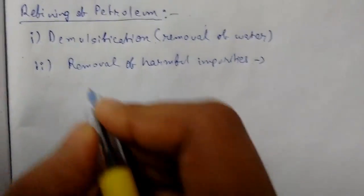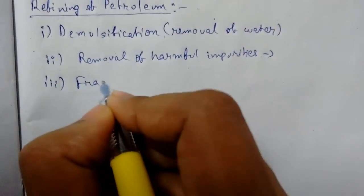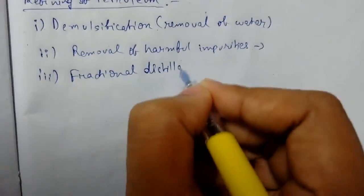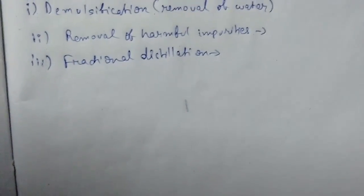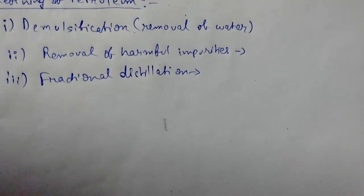The next process is fractional distillation. Fractional distillation is a very important process. The crude oil is heated in an iron retort at about 400 degrees Celsius.